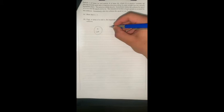The question says: particle A of mass 2m and particle B of mass km, where k is a positive constant, are moving towards each other in opposite directions along the same straight line on a smooth horizontal plane.